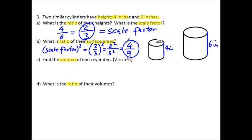Now we need to find the volumes of each cylinder, and fortunately they have given us the formula. The volume of a cylinder is π times r squared times h. The radius is the radius of the circle, which is the base and the top. The radius is 2 inches for the smaller cylinder. Since radius is a length, the ratio between the radii follows the scale factor — 2 to 3 — so the larger cylinder has a radius of 3 inches.